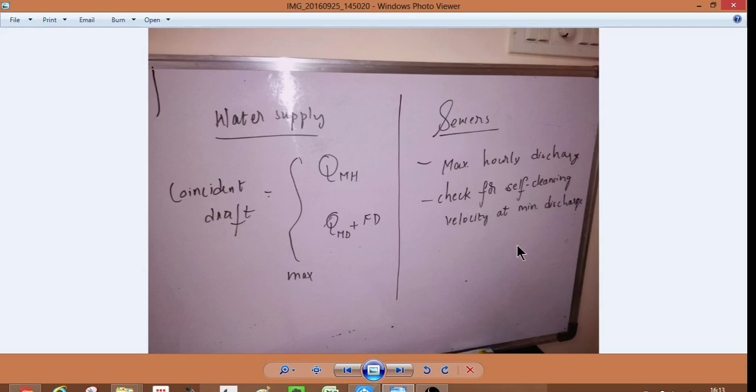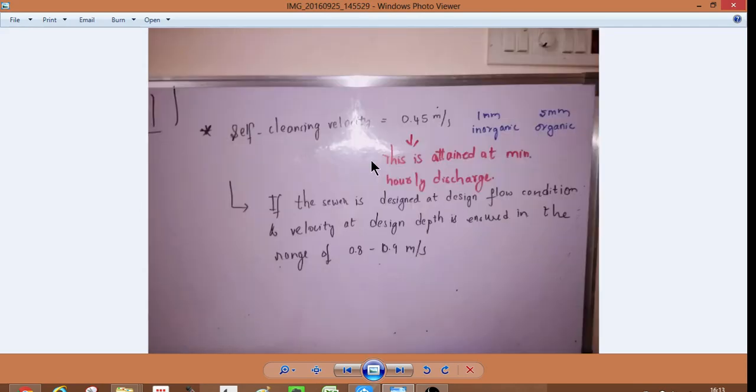Check for self-cleaning velocity. What is self-cleaning velocity? It is for 1mm inorganic or 5mm organic, it is 0.45 meters per second at minimum hourly discharge.